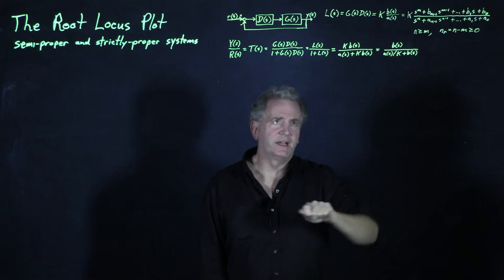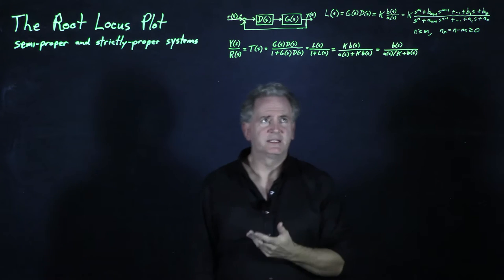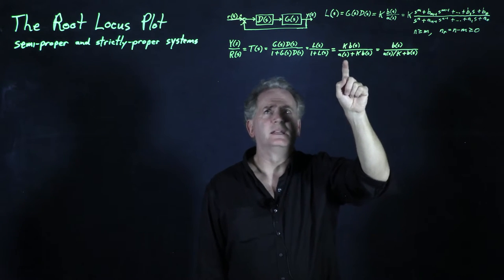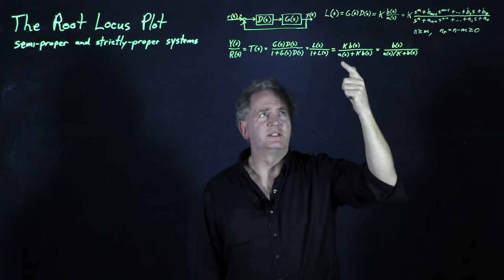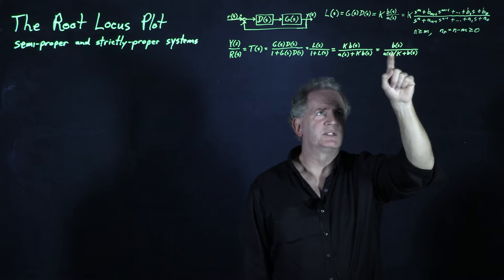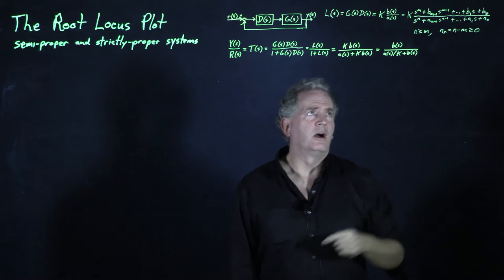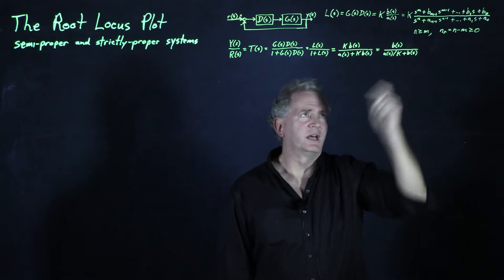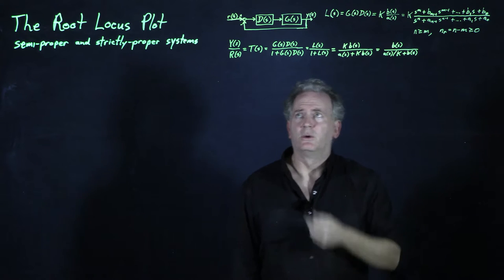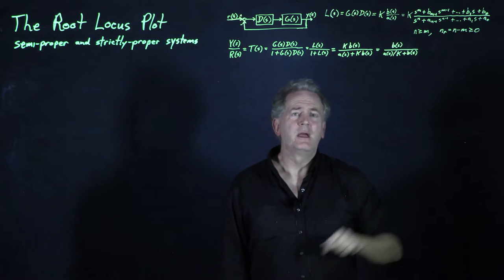If K is very small, the denominator is dominated by the term A(s), so the poles of T(s) are very near the values of s that make A(s) go to zero — namely the open-loop poles. On the other hand, if K is large, the term A(s) becomes negligible compared to K·B(s), so the closed-loop poles approach the values of s that make B(s) go to zero — the zeros of the open-loop transfer function. The root locus plot simply tracks that movement as you change the parameter.